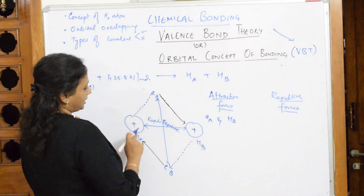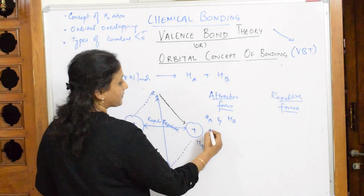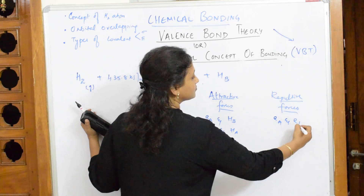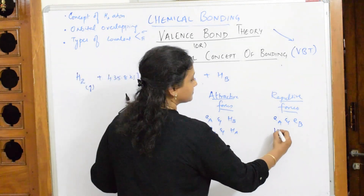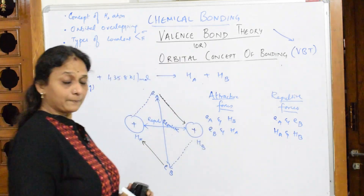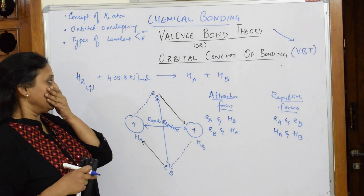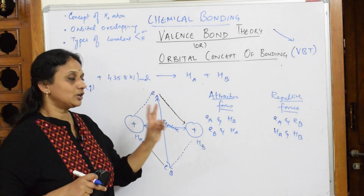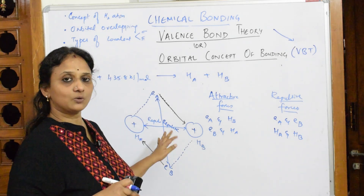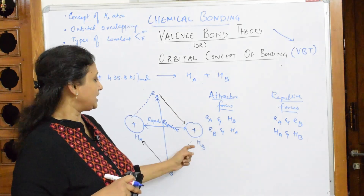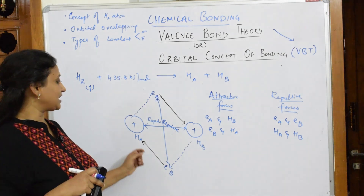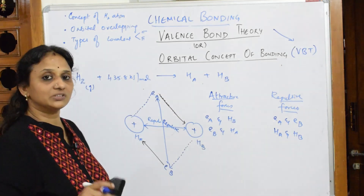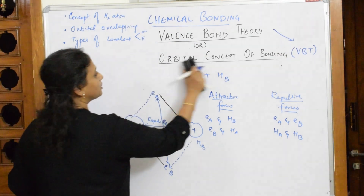Because of the formation of two atoms and the supply of energy, when two different atoms are formed, attractive forces and repulsive forces start acting. A new attractive force develops between Ea of one and Hb of the second one, and Eb of this and the H of the second one. These are the new attractive forces, and repulsive forces between similar charges have also developed.